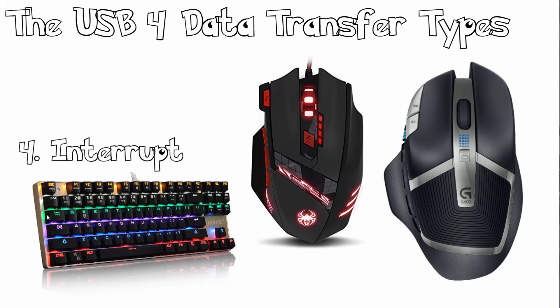Interrupt transfers are used by peripherals exchanging small amounts of data that need immediate attention, used by devices to request servicing from the PC host. Devices like the mouse and keyboard fall into this category, and error checking also validates the data.